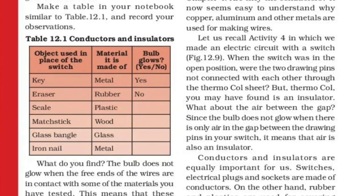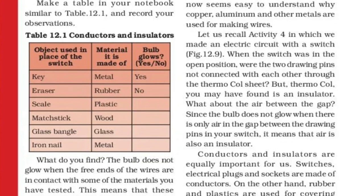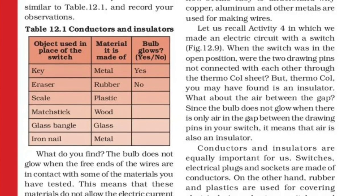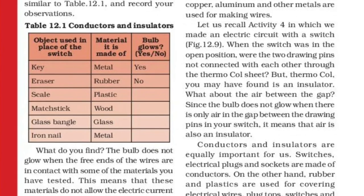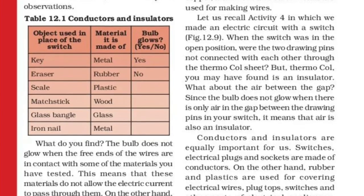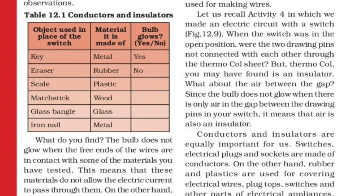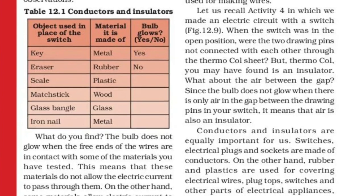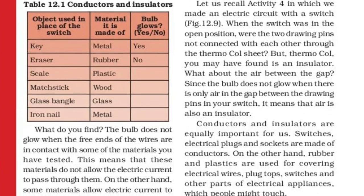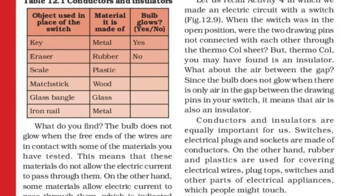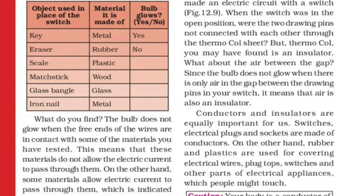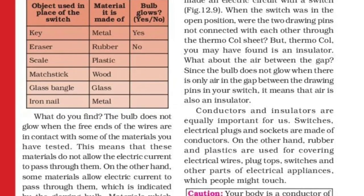Now we have a table to record results. The object is used in place of the switch. The eraser is rubber — it is not a conductor, so it will not glow the bulb. The scale is plastic — it is not a conductor, so it will not glow the bulb. The wooden piece will also not glow the bulb. Then we test the glass. The metal, however, is used as a conductor.